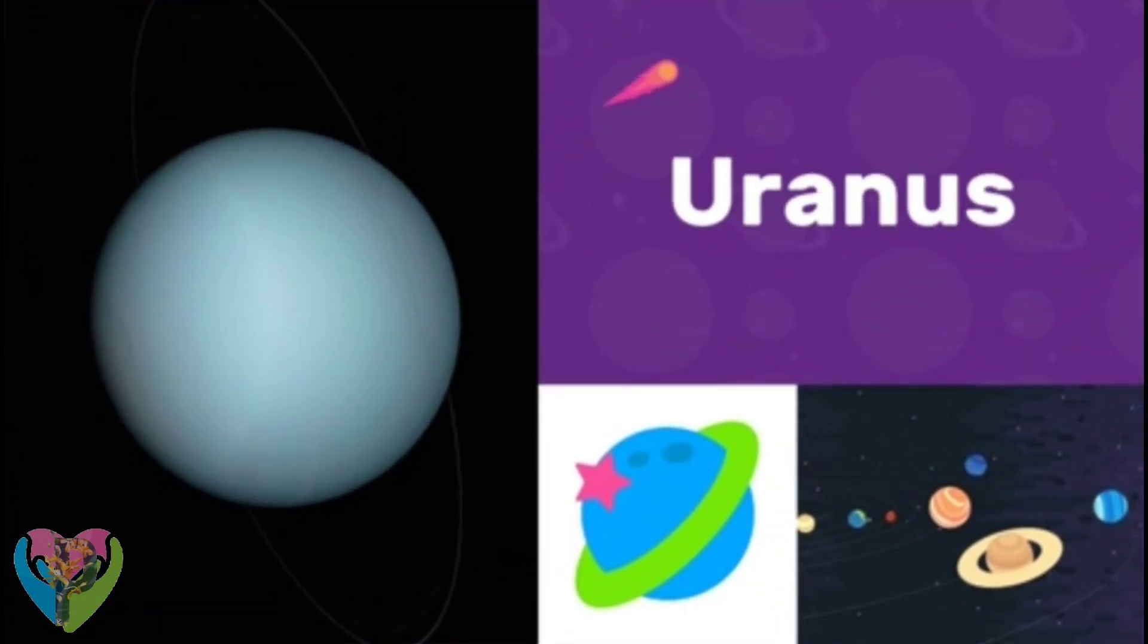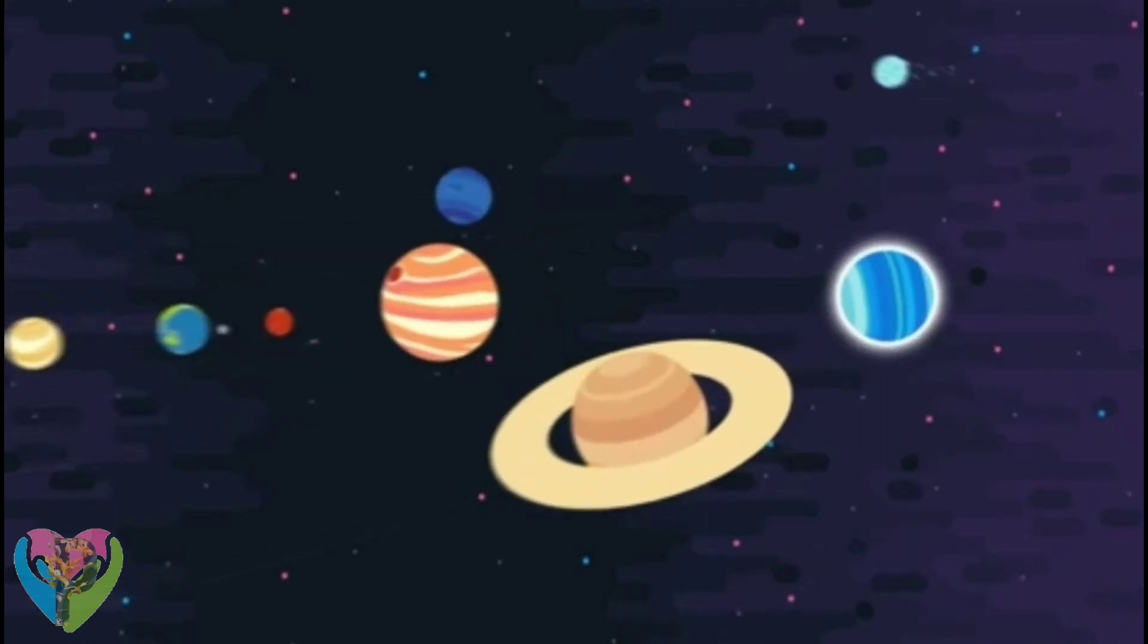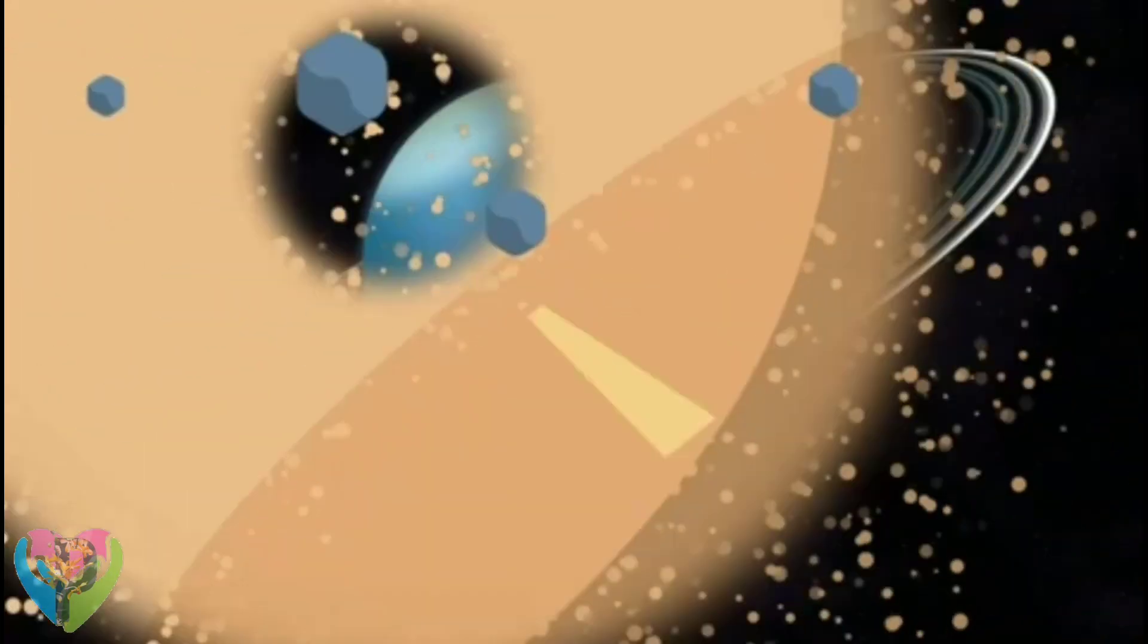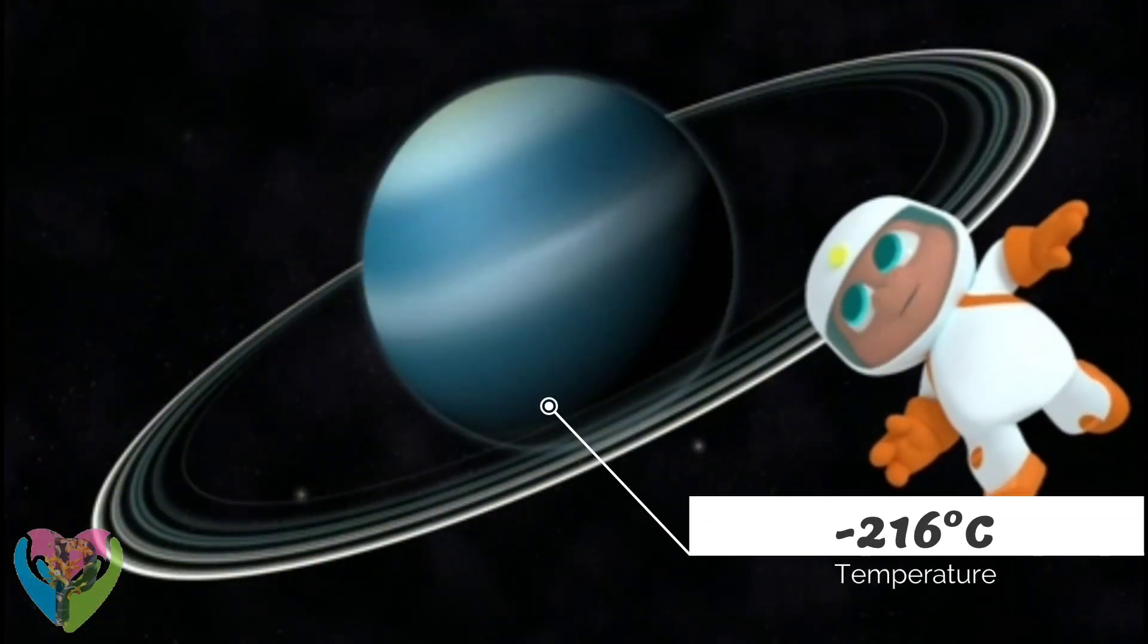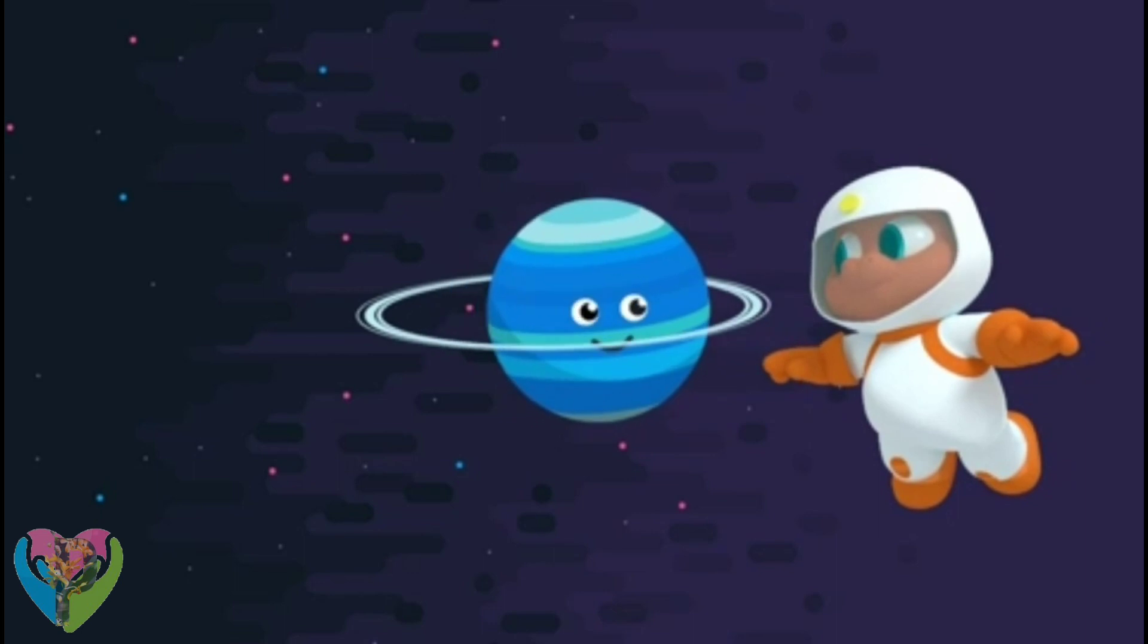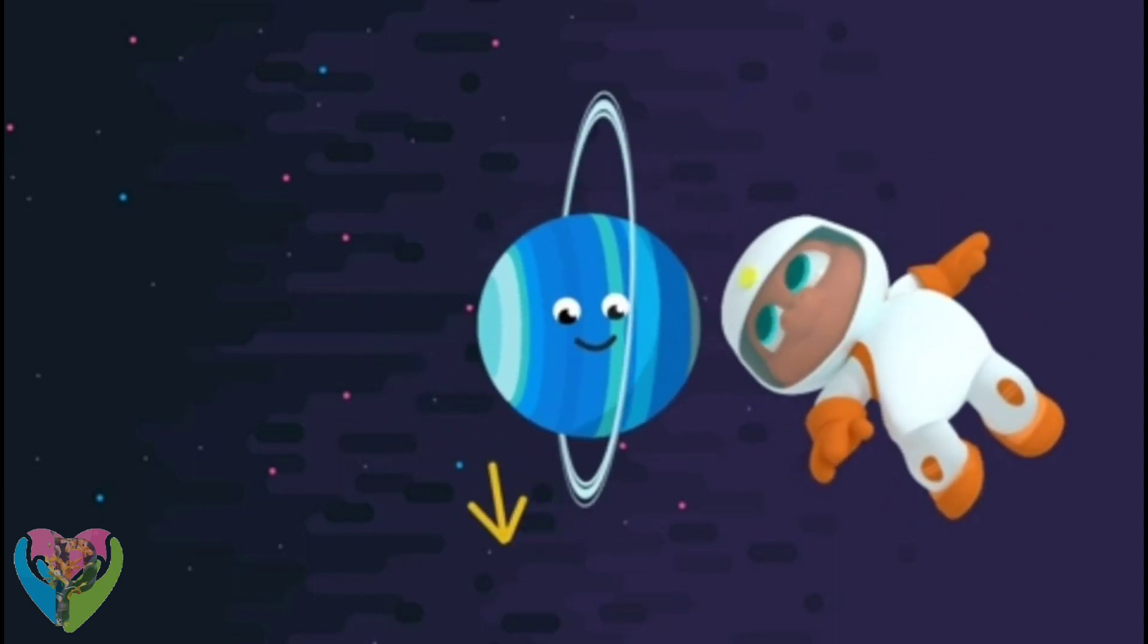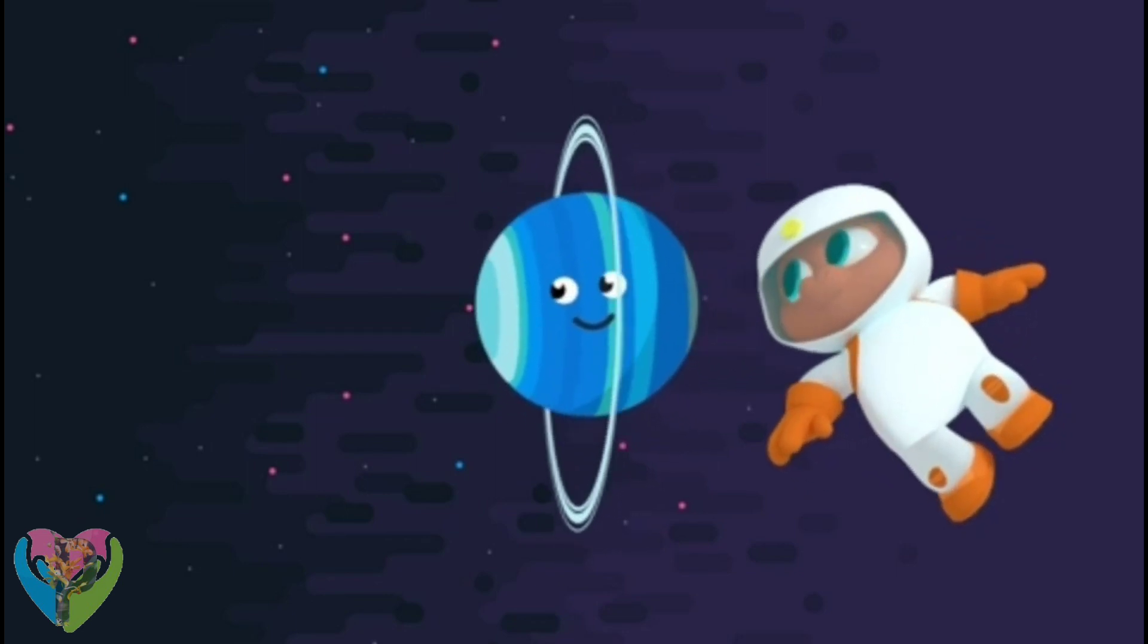Uranus! Uranus is the seventh planet from the Sun in our solar system. That's the planet Uranus, Gorby. It's turned over to one side! We should tell someone! Uranus is tilted, Gorby. So its rings are vertical. That means they are going from up to down instead of side to side. And the planet spins on its side.